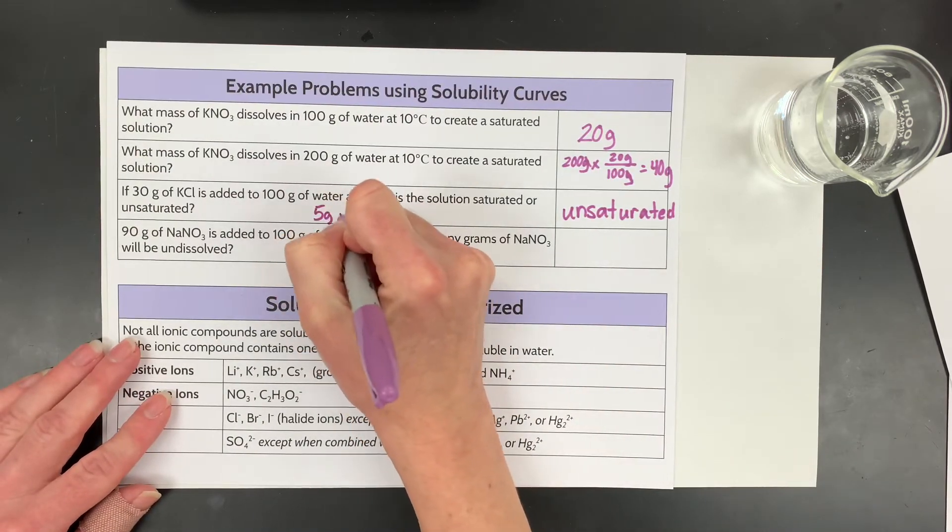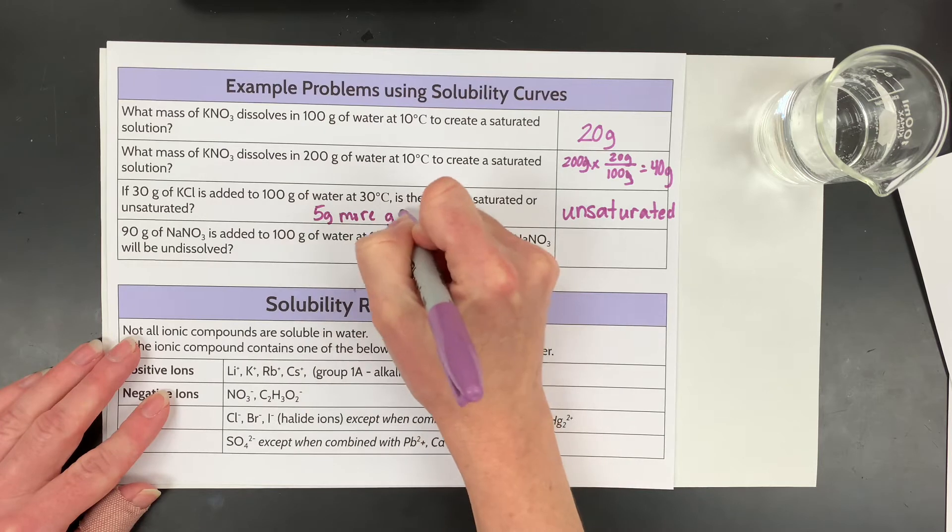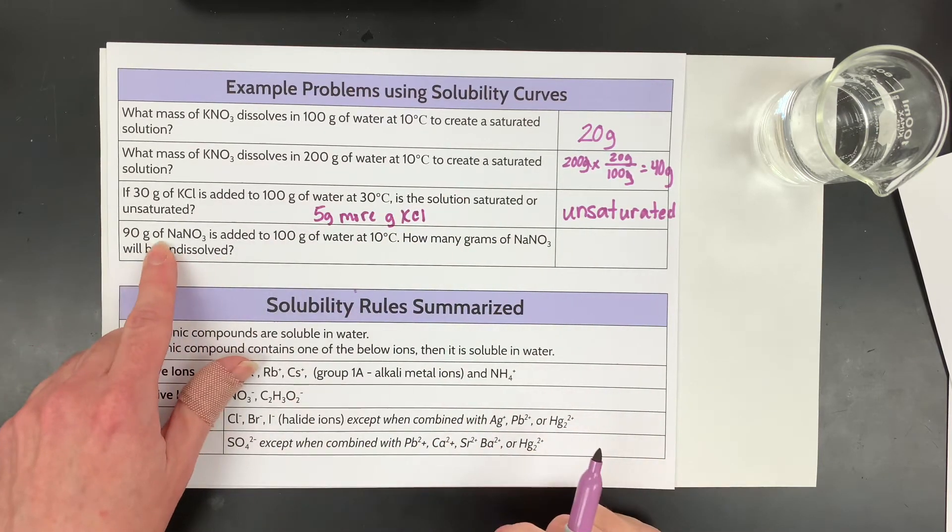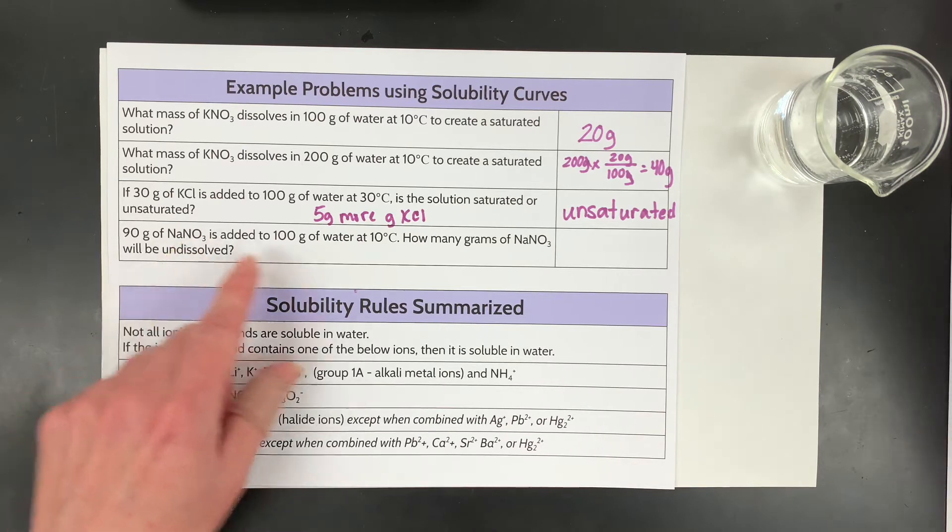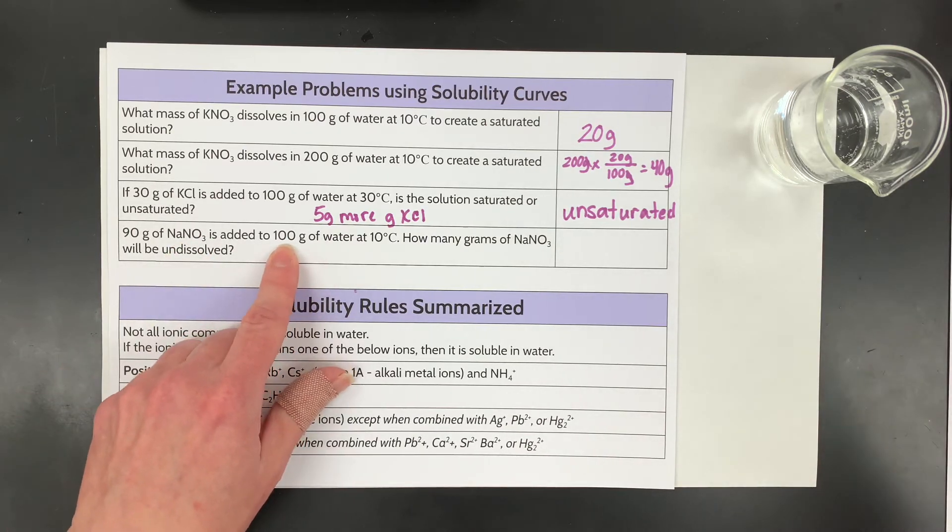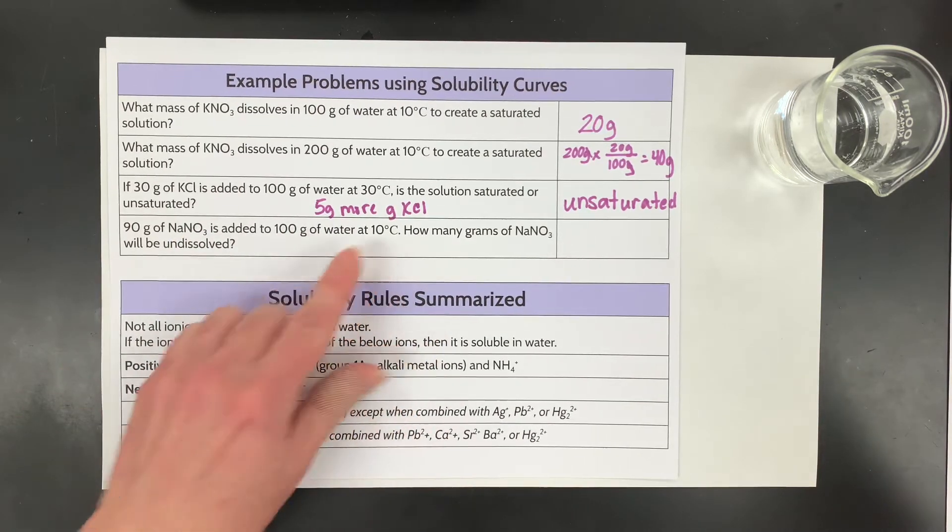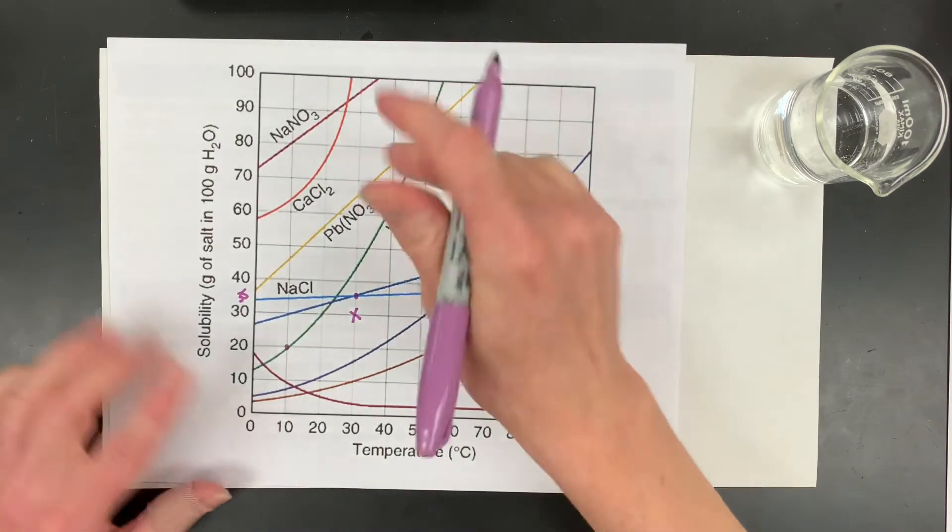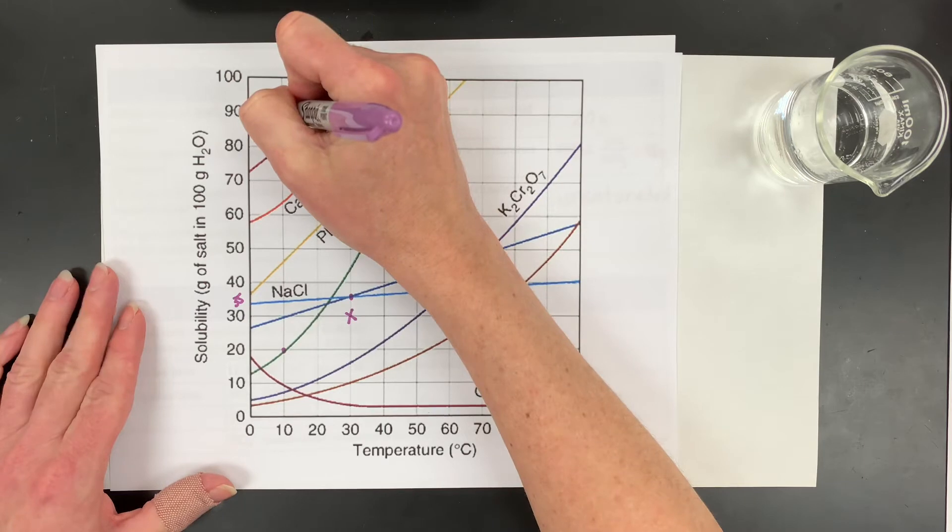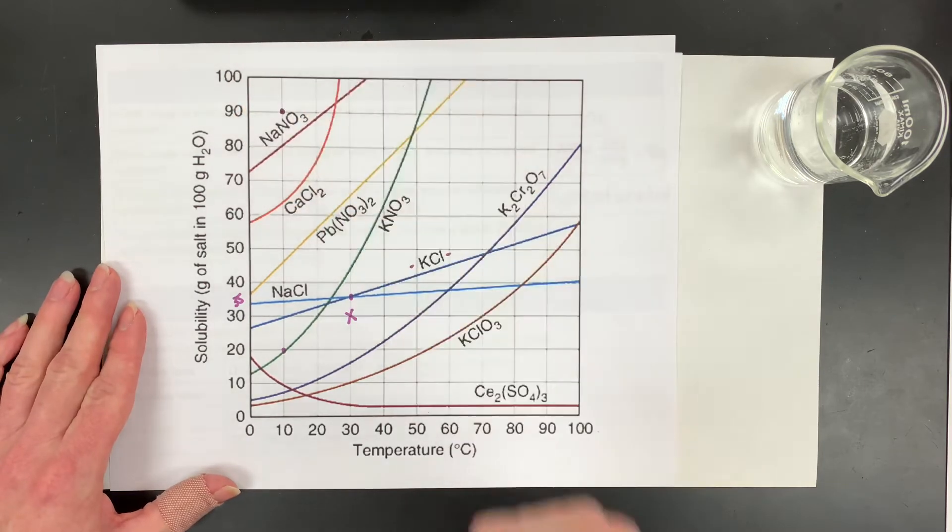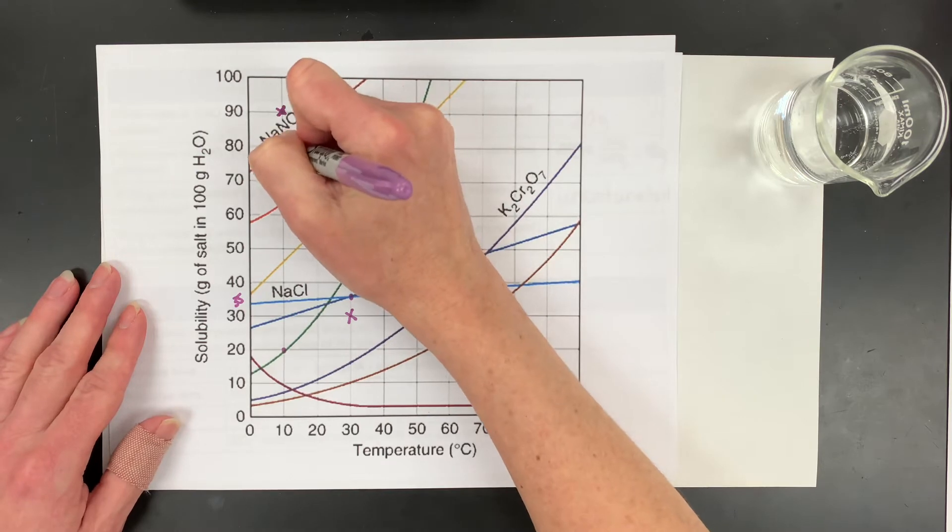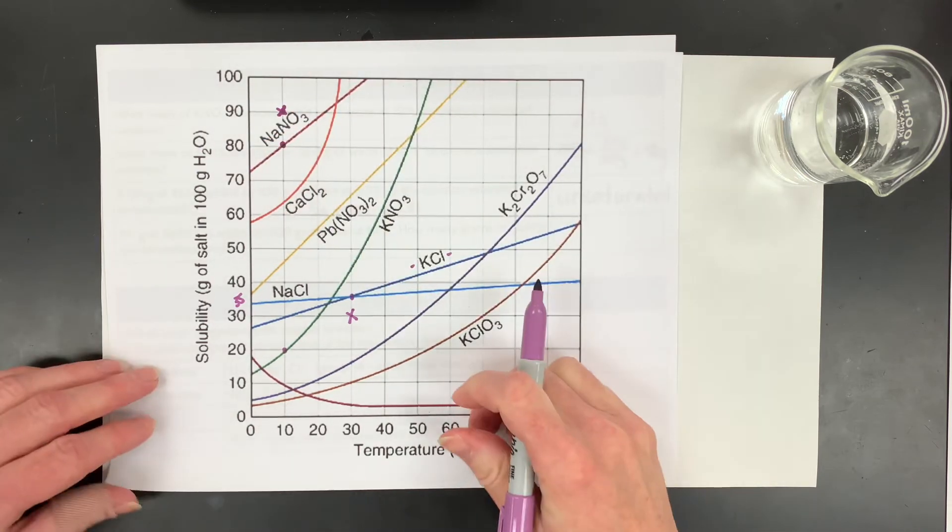With the next question, 90 grams of sodium nitrate in 100 grams of water, so it matches the axes, at 10 degrees. So 10 degrees, 90 grams, and sodium nitrate. So 10 degrees, 90 grams, and sodium nitrate, so it's right there is the dot, or the X kind of marks the spot here. And then this is what can dissolve.